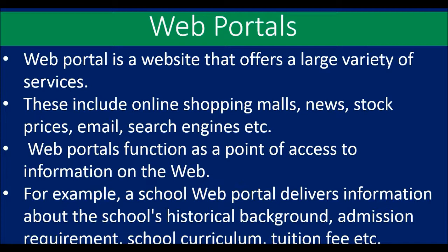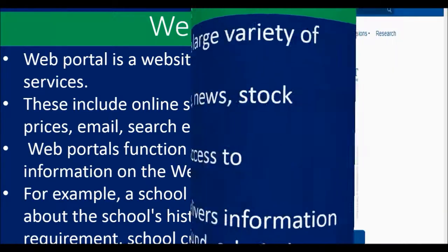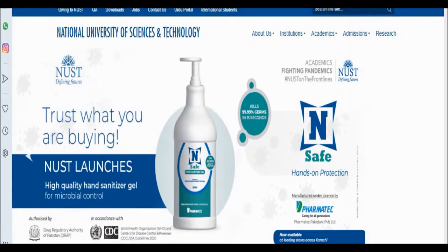A school web portal includes historical background, admission requirements, school curriculum, school books, and tuition fees. For example, the website of National University.